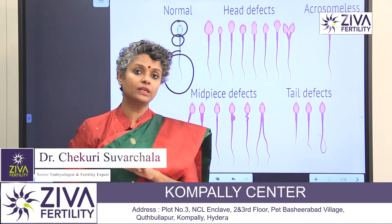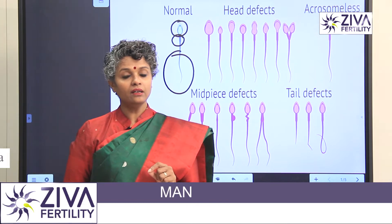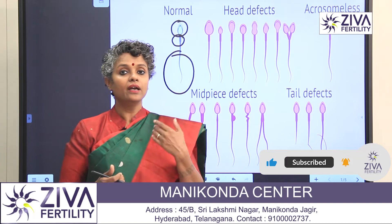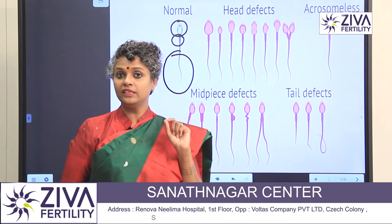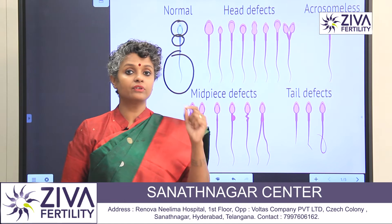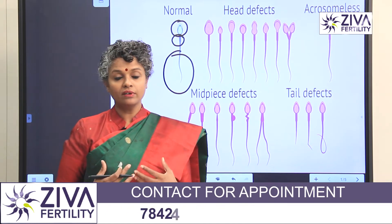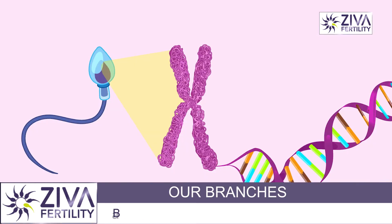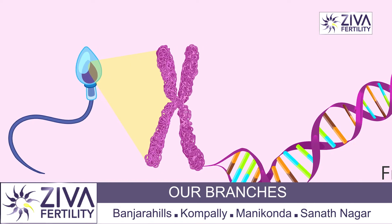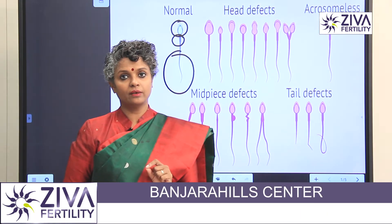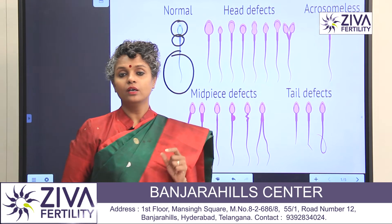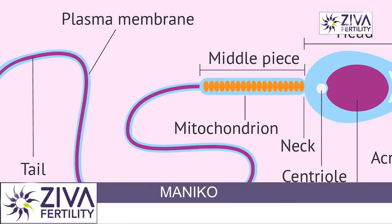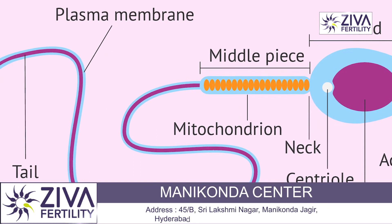The tail helps it move — with the tail, it keeps wriggling like a snake and moves forward. The head has the DNA which is required for fertilization. All the DNA you have comes half from your mother and half from your father, so the paternal side of the DNA is packed up inside the head in a very specialized manner. The mid-piece is another very crucial part where mitochondria and centrioles are — that's the powerhouse, like a battery for the sperm which makes it move.